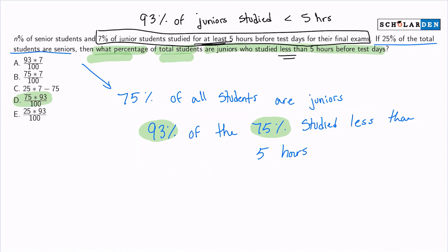So how are we going to do that? Well, we want to keep it as a percent. Now, when we say of, so 93 percent of something, we're basically multiplying. So we have 93 percent times 75 percent.